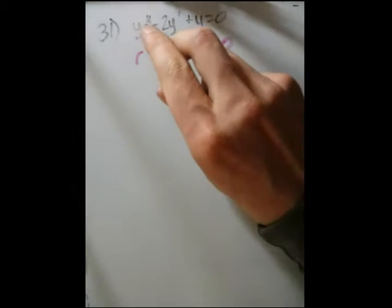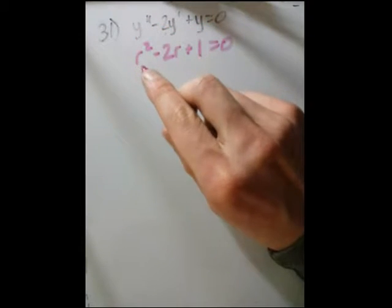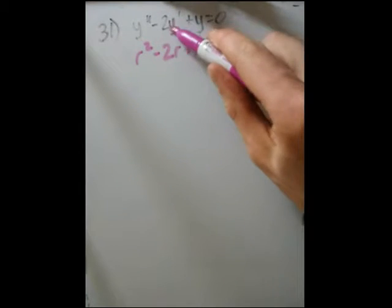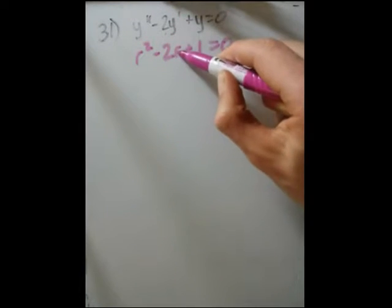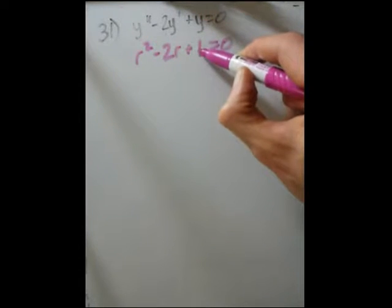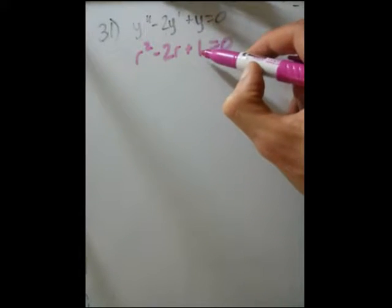In the same way, we take the coefficient in front of y double prime and place that in front of r squared, which is 1. We place the coefficient in front of y prime in front of r, and the coefficient in front of y in front of a constant, and that is the constant 1.